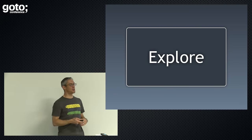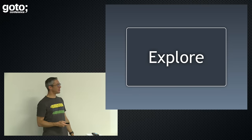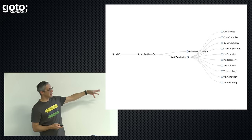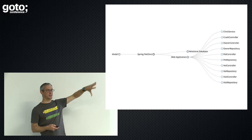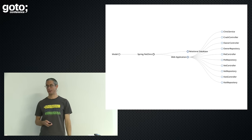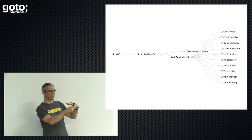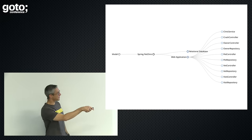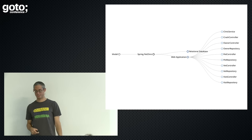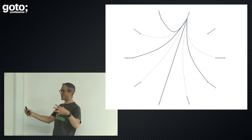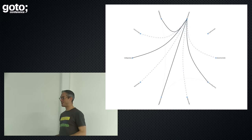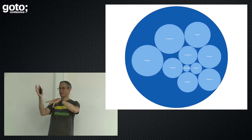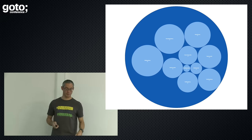Speaking of exploring: once you start to model your software, you can do some really interesting stuff. You can create a JavaScript D3 visualization of the static elements — it's just a tree structure. This is a model of one of the sample applications from the Spring team, called the Spring Pet Clinic — just the software system, containers, and components. You can find all of the interesting component dependencies, incoming and outgoing. You can rate components based on size and complexity. Once you have a model, you can do some cool stuff with it.